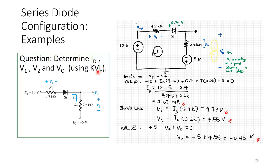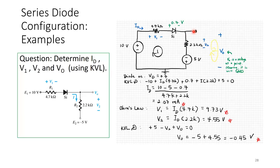Redrawing the circuit: the 10-volt source is on one side, the negative 5-volt source on the other. Because it's negative, the negative terminal is at the top. The 4.7 kilohm, silicon diode, and 2.2 kilohm are in their correct positions. Vout is the voltage at this node with respect to ground.